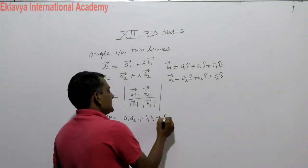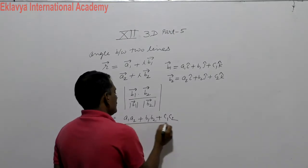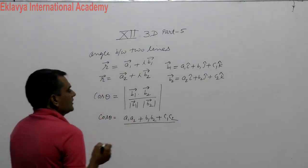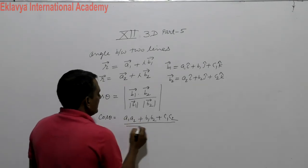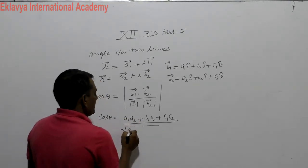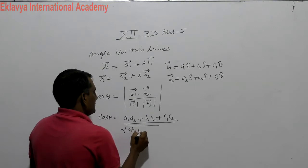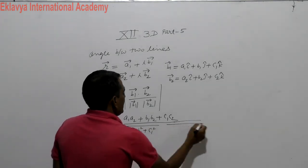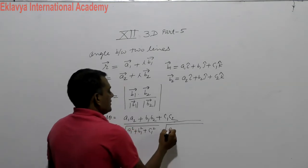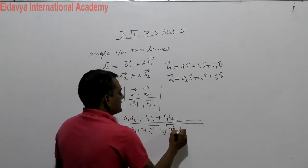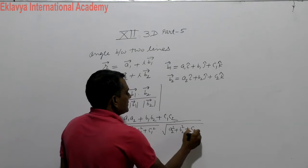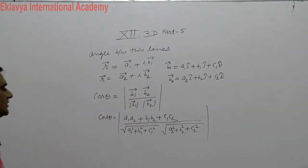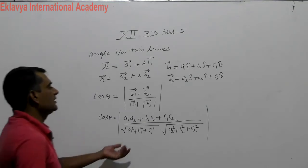So the result is like that. This is the dot product of B1 and B2. On the downside, the magnitude of B1 is written as root of A1 squared plus B1 squared plus C1 squared, and the magnitude of B2 is root of A2 squared plus B2 squared plus C2 squared. This means that value is positive.